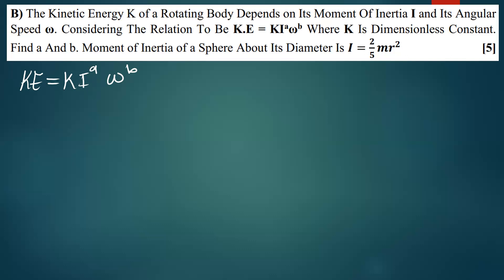We can find the dimensions for the moment of inertia and the angular speed — these are the important quantities. Since k has no dimensions, it's a dimensionless constant. The kinetic energy is also important because we need to know its dimensions as well.